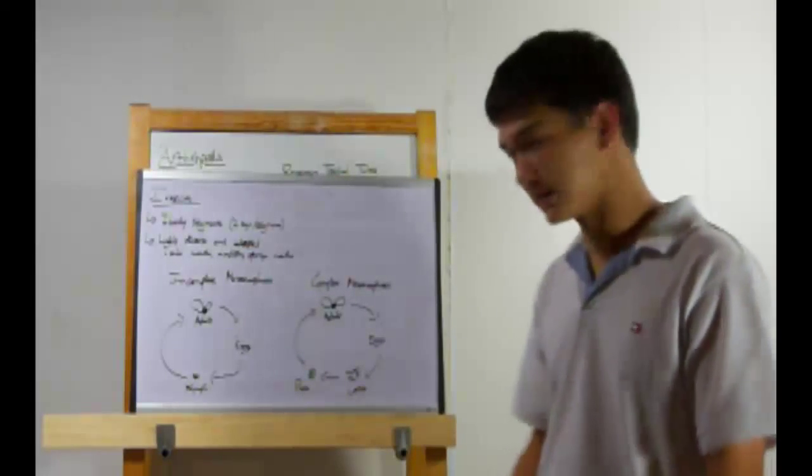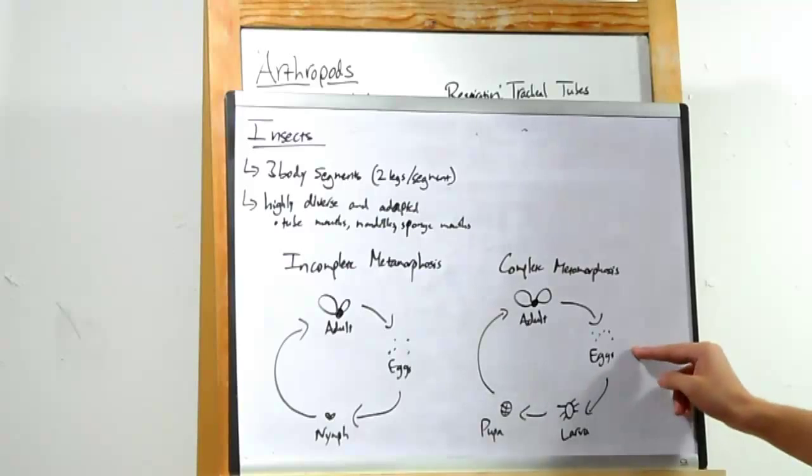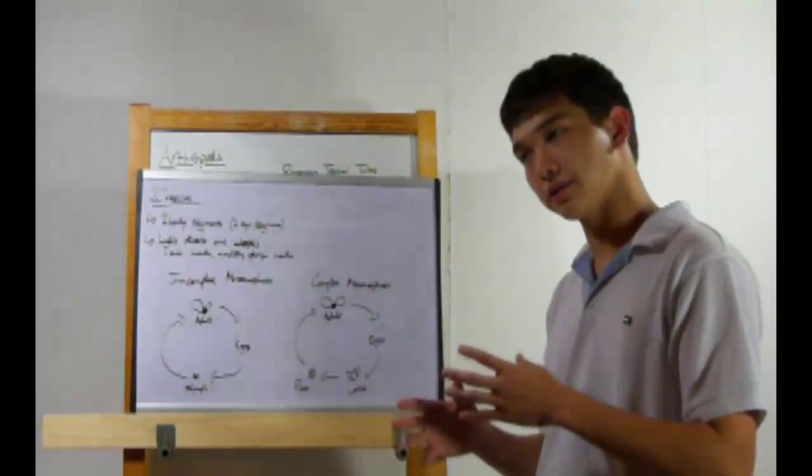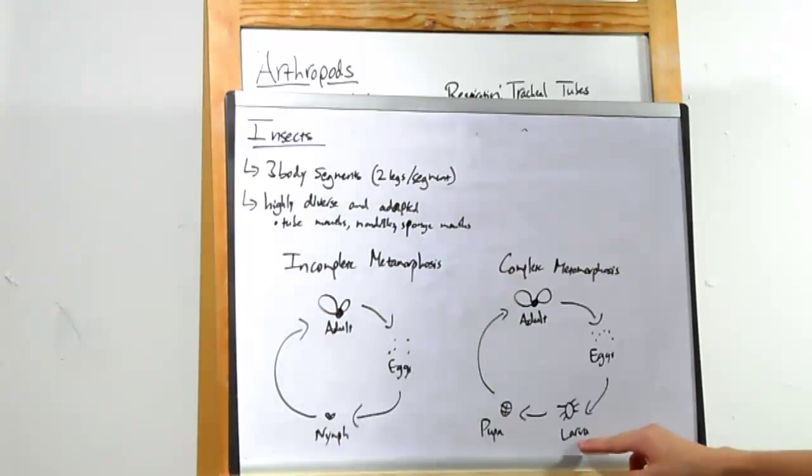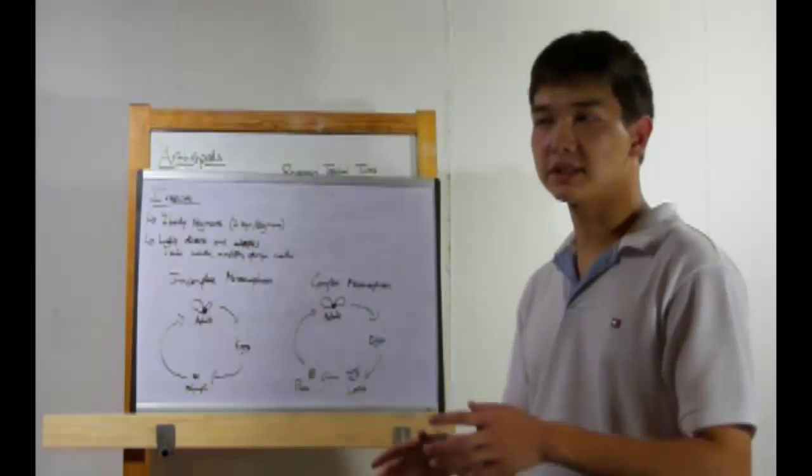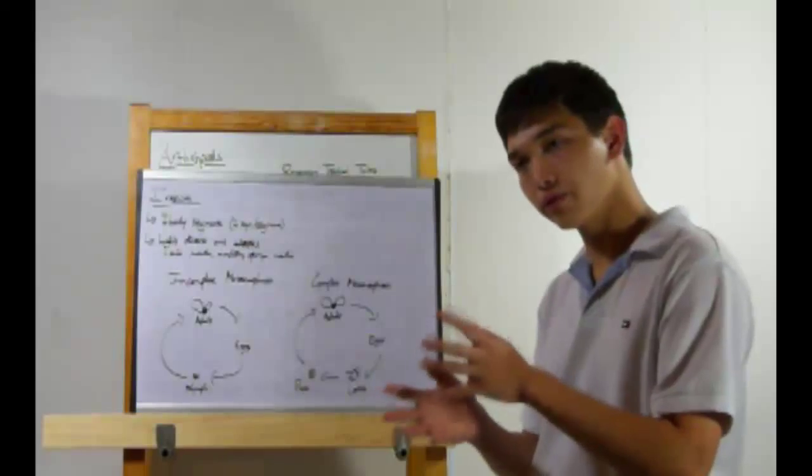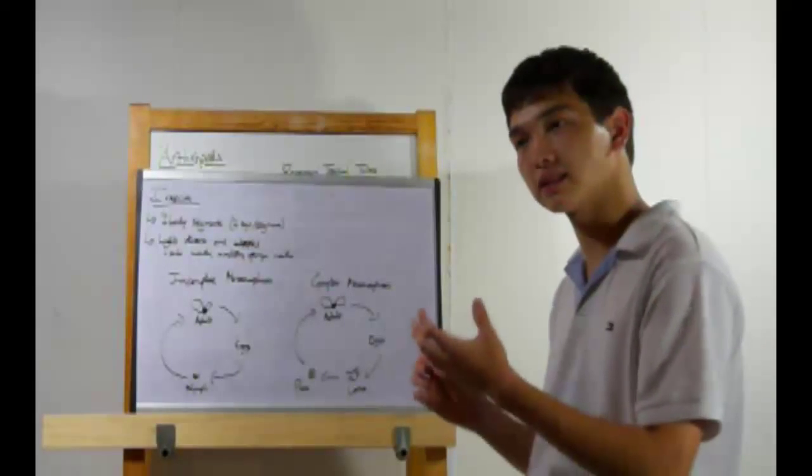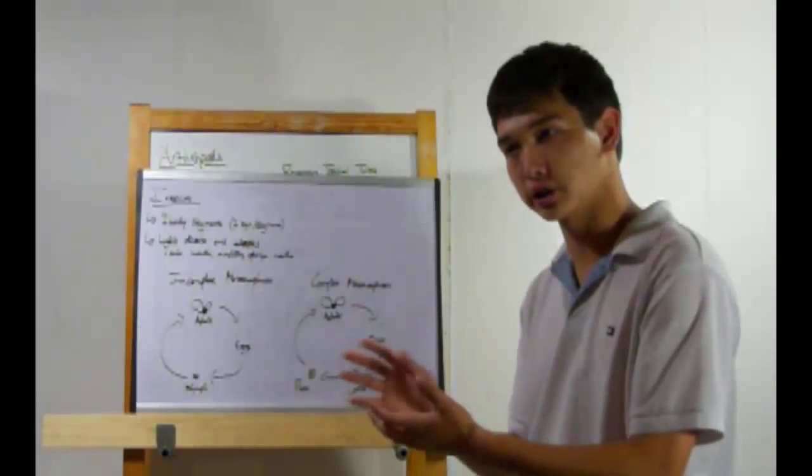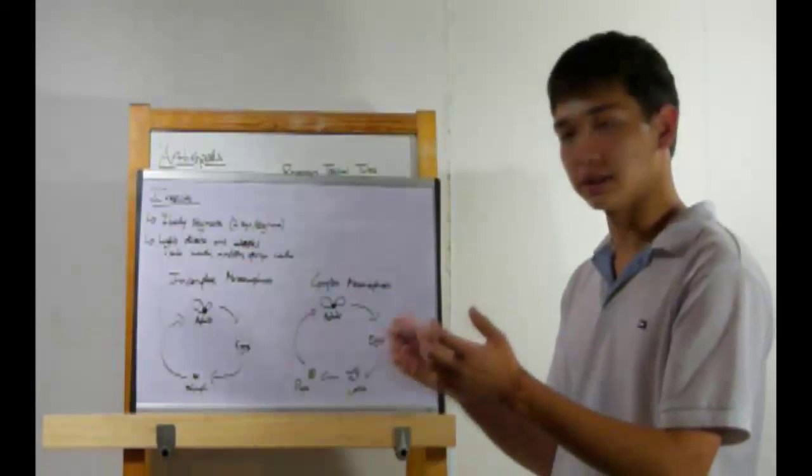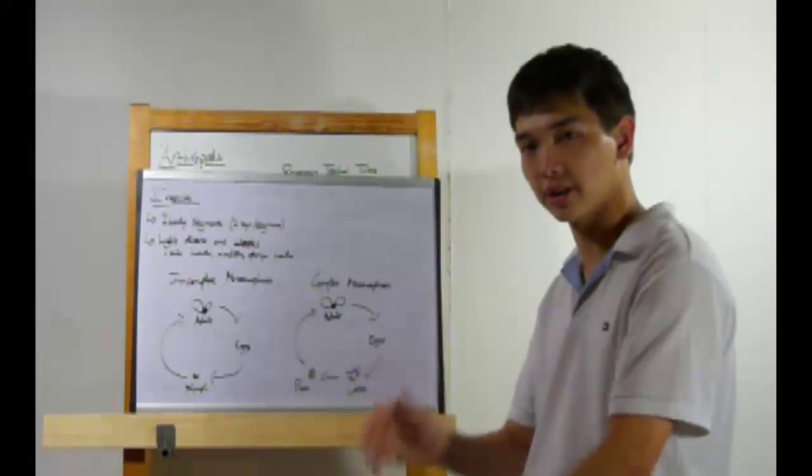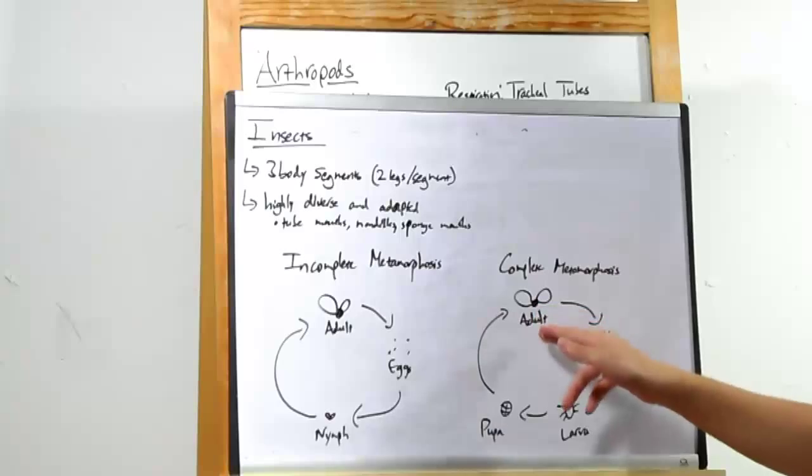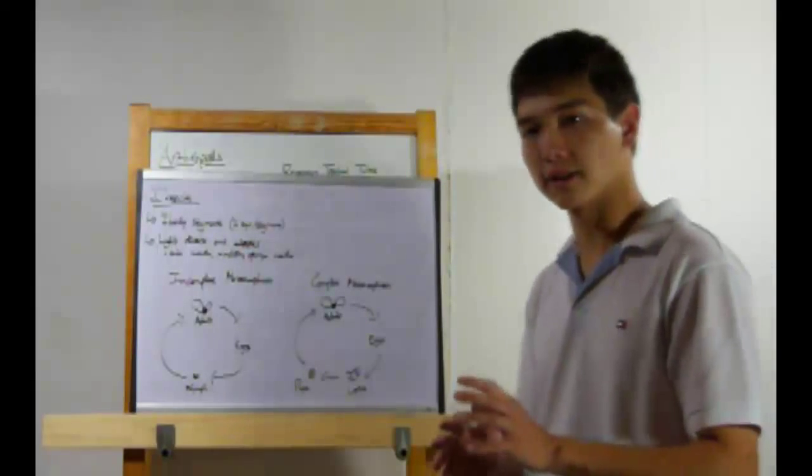Let's go to complete metamorphosis. Adults lay eggs. The eggs will hatch into larva. The larva do not look like the adult. This is the juvenile stage. The larva will then mature into pupa. The pupa stage really doesn't move very much. It doesn't consume too much energy. That's because a lot of it is being devoted to internal changes, when the larva, which is now a pupa, is becoming more like an adult. And finally, the pupa matures into an adult. And that's pretty much it for arthropods.